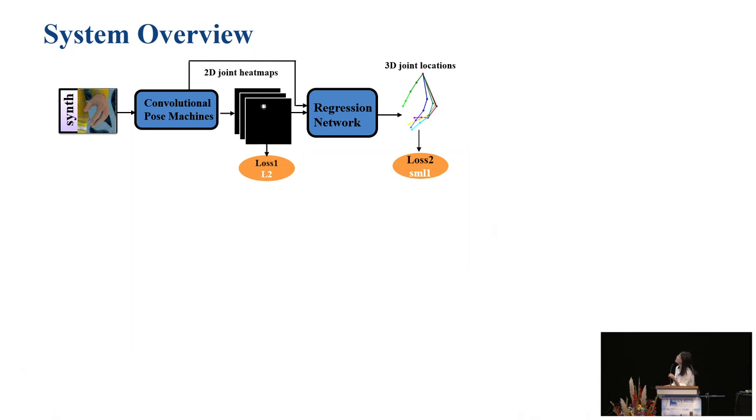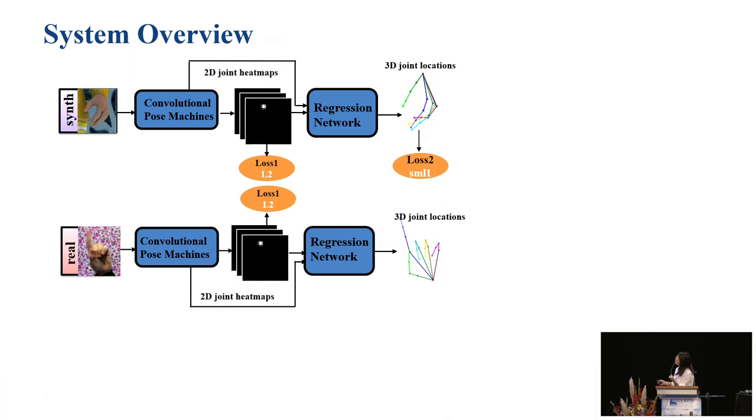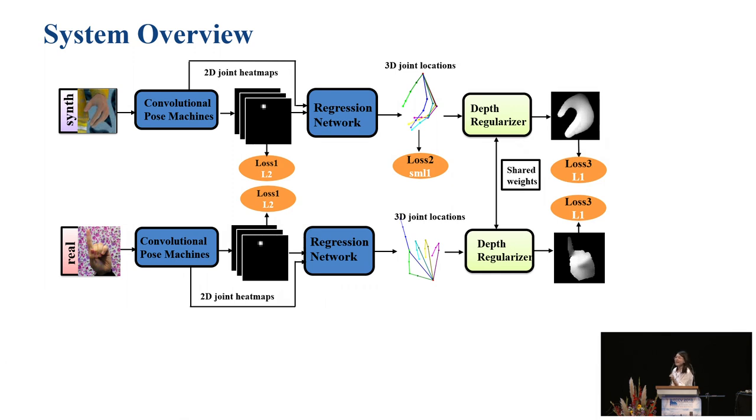To briefly introduce the system overview, we train the synthetic network in a fully supervised method to get 2D and 3D results. The input of the regression network is not only the 2D result but also features from the raw images, because direct 2D to 3D mapping may have ambiguity problems. If we directly use the pre-trained model on real images, the 3D output may not be quite valid. To solve this, we introduce a depth-regularizer network which can learn the mapping between the 3D joints and the depth images.